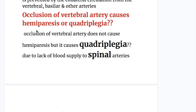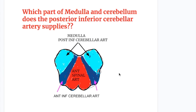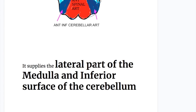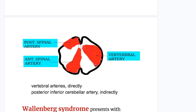Occlusion of the vertebral artery does not cause hemiparesis but causes quadriplegia, because of the lack of blood supply to the spinal arteries which arise from the vertebral artery. Which part of the medulla and cerebellum does the posterior inferior cerebellar artery supply? It supplies the lateral part of the medulla and the inferior surface of the cerebellum.